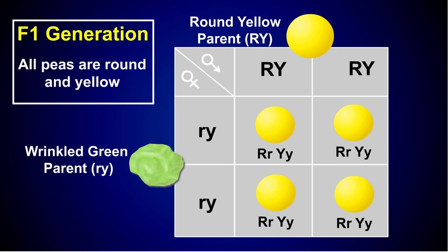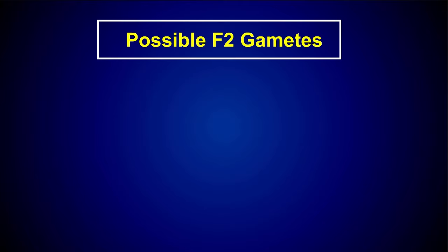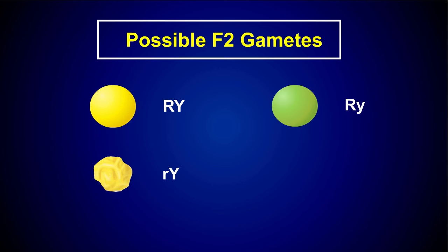Because all offspring within the F1 generation are heterozygous for both traits, both the males and females can produce four different gamete combinations: round yellow peas, wrinkled yellow peas, round green peas, and wrinkled green peas.